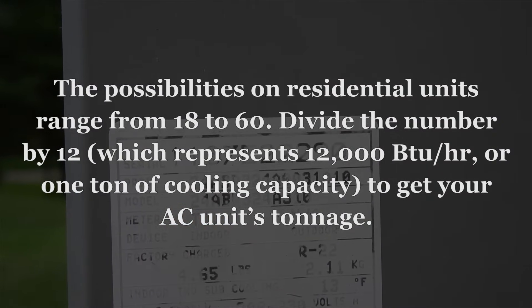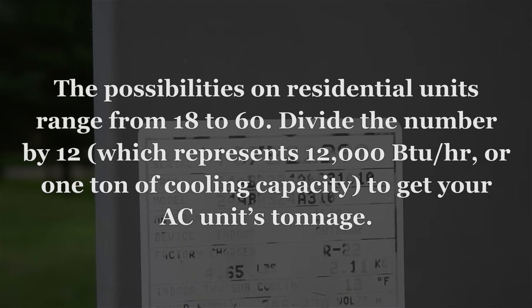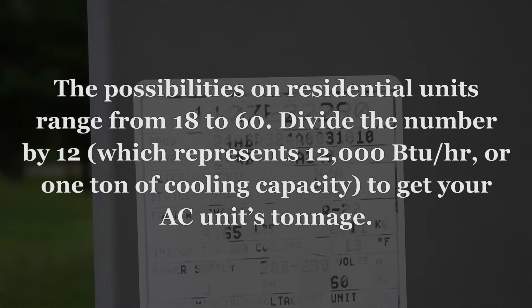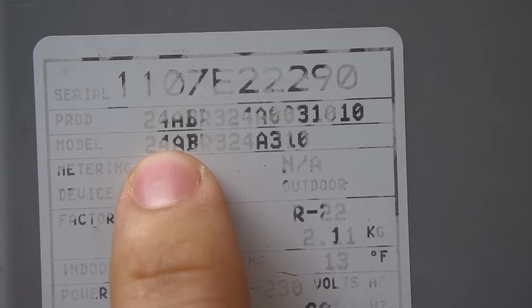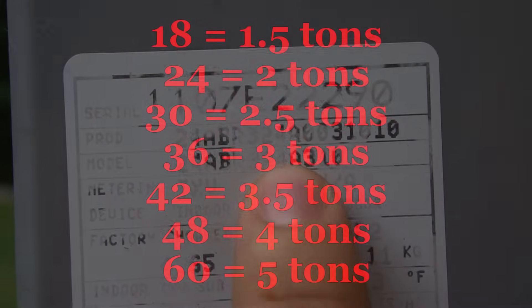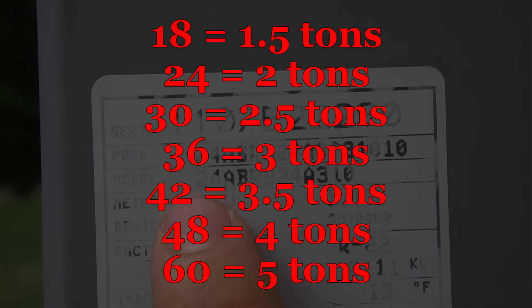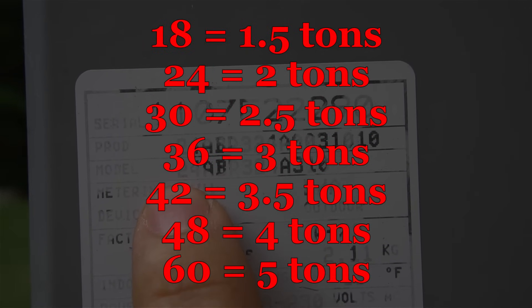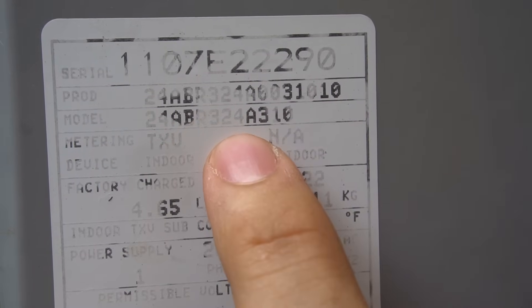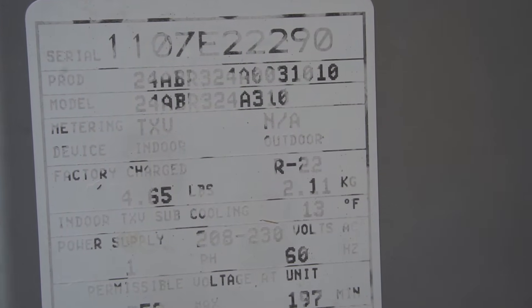And there's also halves. So there's 1.5 ton, 2.5 tons. For example, if it was an 18 right here or in the middle, that would be a 1.5 ton unit. Or in my case, it's a 24. That means it's a two ton unit. So there you have it. That is how you read the tonnage of your air conditioner outside.